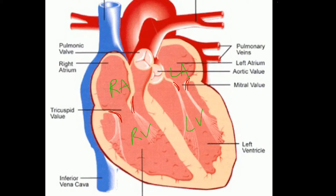The heart also has two semilunar valves. The valve on the right is called the pulmonic valve, also known as the pulmonary valve, and the valve on the left is called the aortic valve. They get their names because the pulmonary valve is the opening towards the pulmonary artery, and the aortic valve is the opening towards the aorta. The function of these valves is to prevent the backflow of blood. The atrioventricular valve on the right is the tricuspid, and on the left is the mitral or bicuspid.